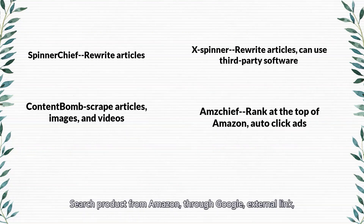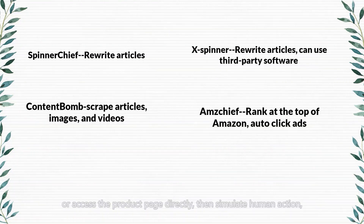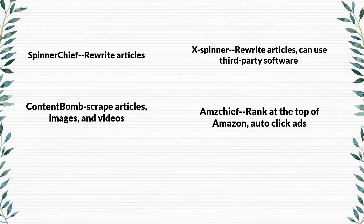Amazon Chief can search products from Amazon through Google, an external link, or by accessing the product page directly. It simulates human actions such as add to cart, view comments, click images, answer help, buy, and so on. It also can auto-click ads.